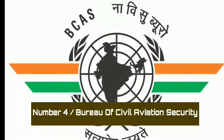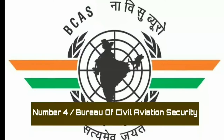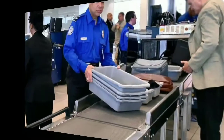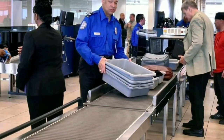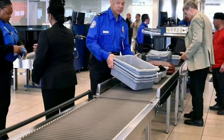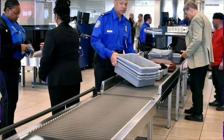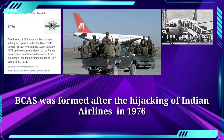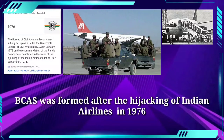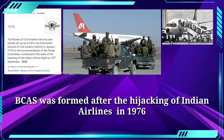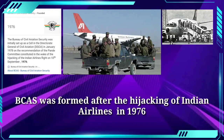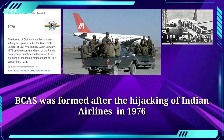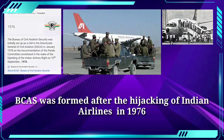Number four is Bureau of Civil Aviation Security. For the safe operation of civil aviation in India, security services play a very important role. Initially, after the hijacking of Indian Airlines in 1976, BCAS was formed as a part of DGCA to monitor, inspect, and train personnel in civil aviation safety measures.